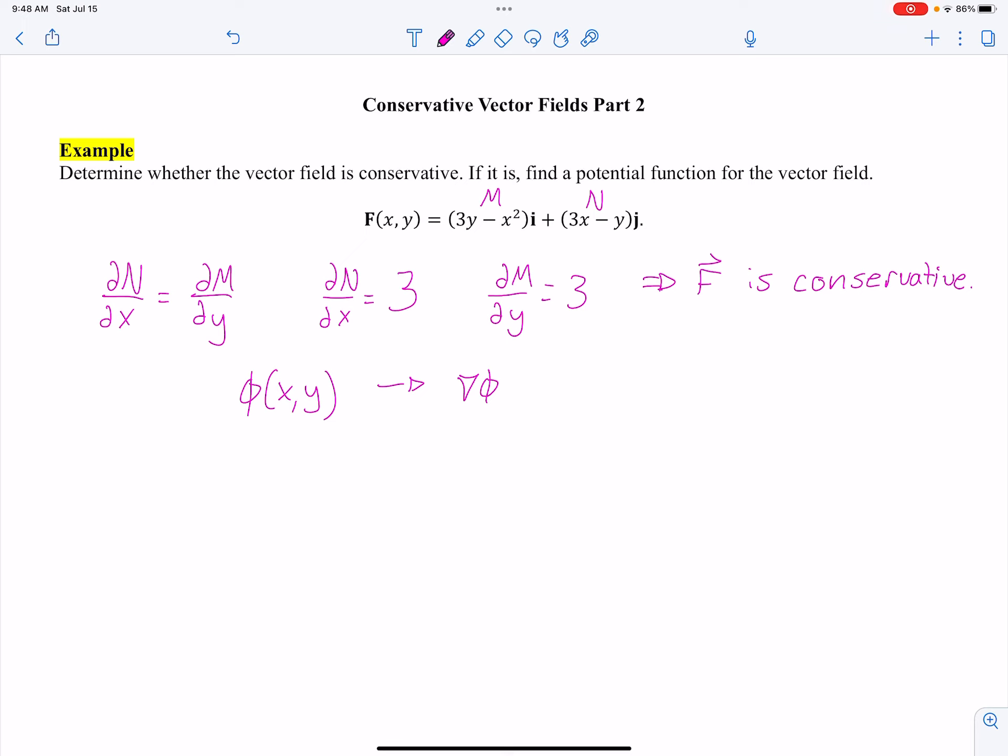Let's go ahead and define. The gradient of phi is going to be the partial of phi with respect to X, and then the gradient for the Y component was the partial of phi with respect to Y. That was our definition.